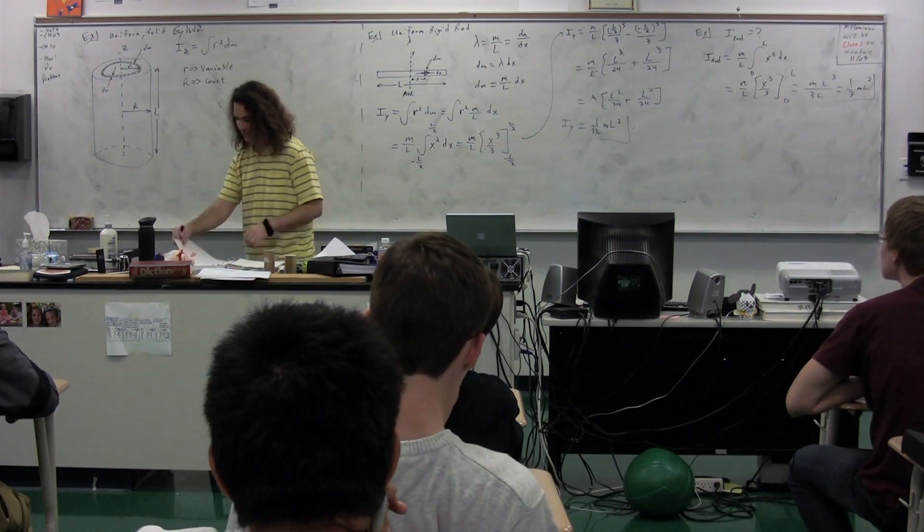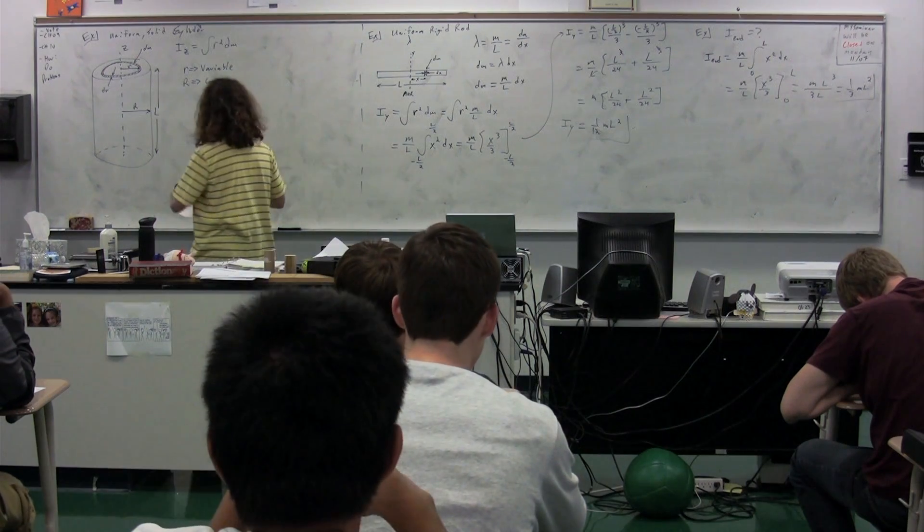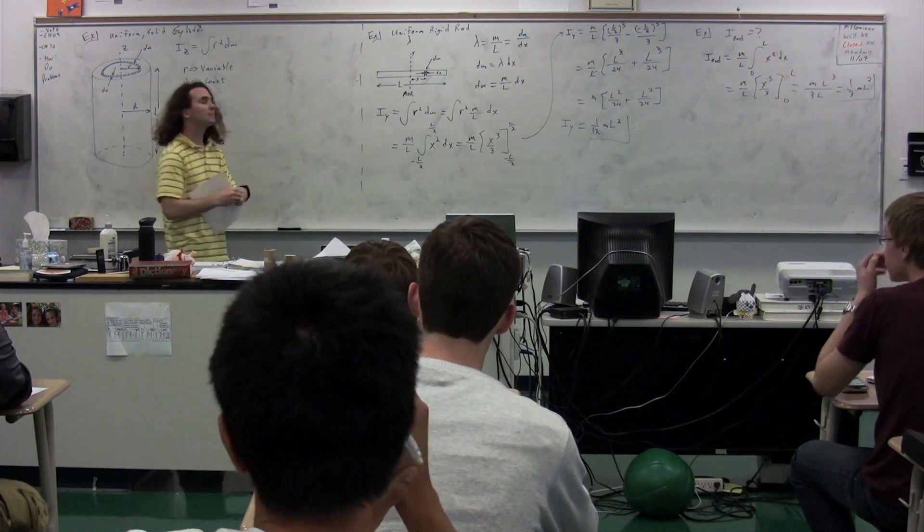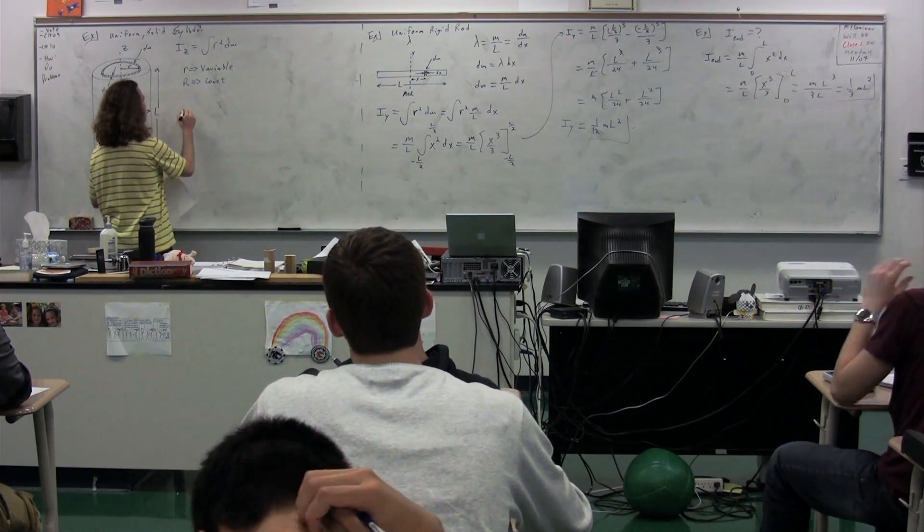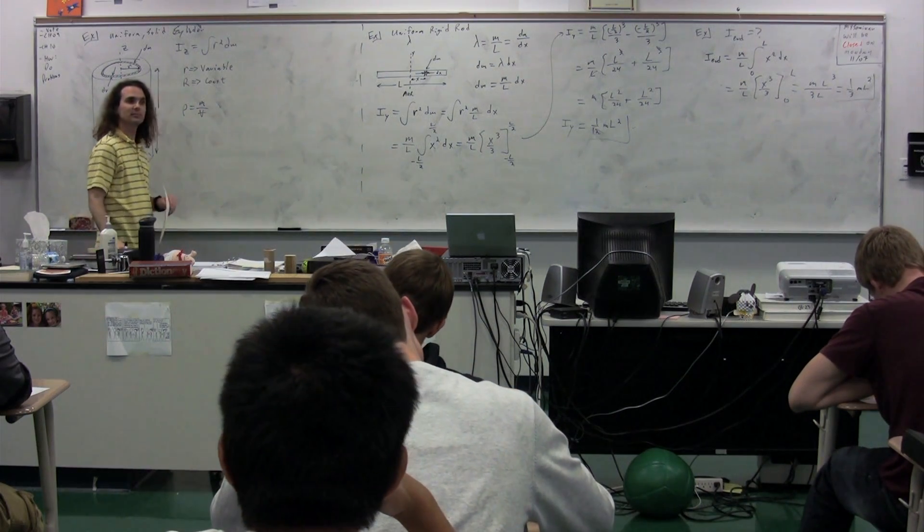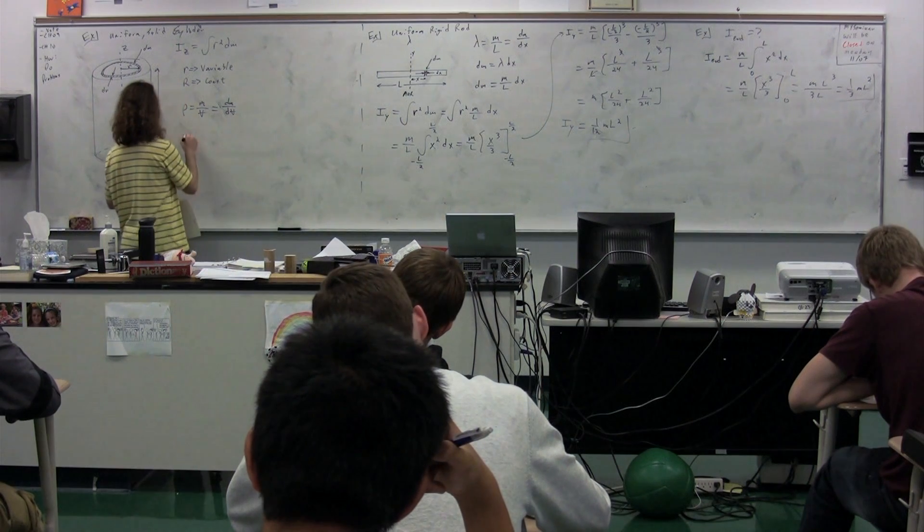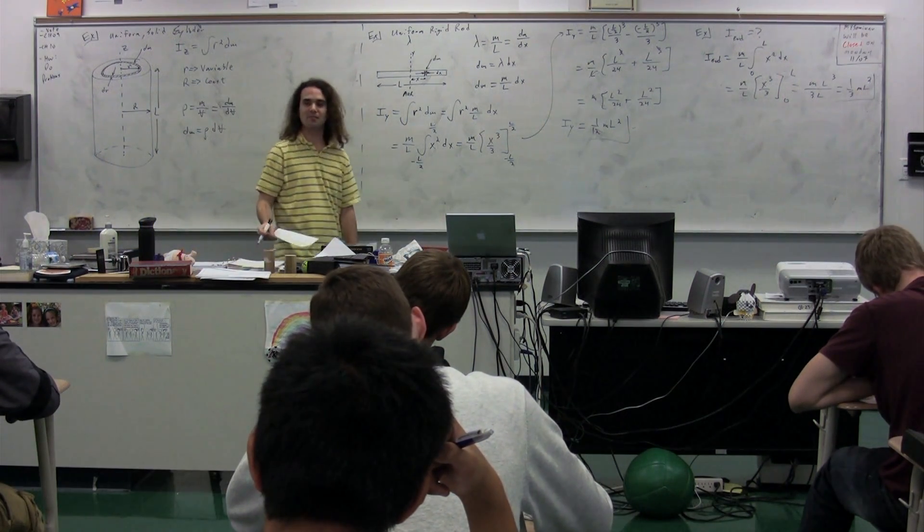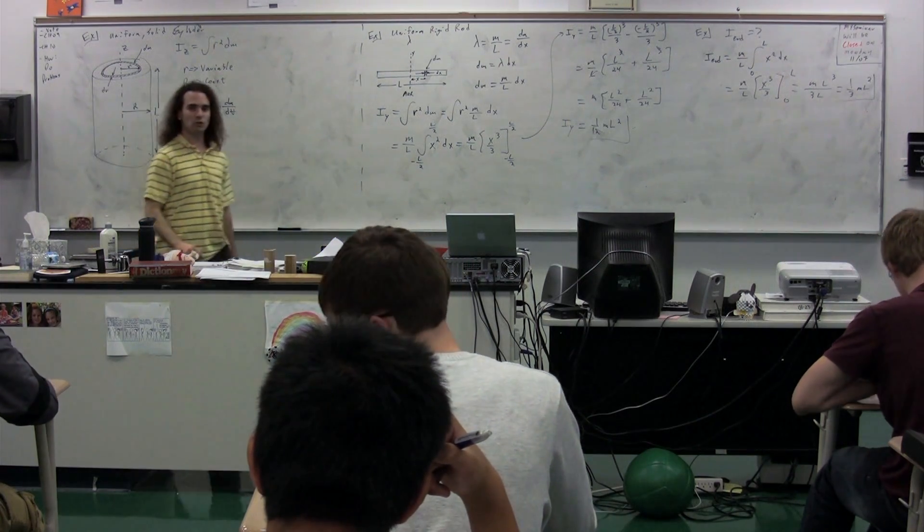So, we need to go through and figure out the moment of inertia. So, we have to deal with dm. Again, we have this issue. Density equals mass over volume. Well, that's equal to dm divided by dv. So, dm equals rho times dv. Well, dv is the volume of dm, which is a toilet paper roll.